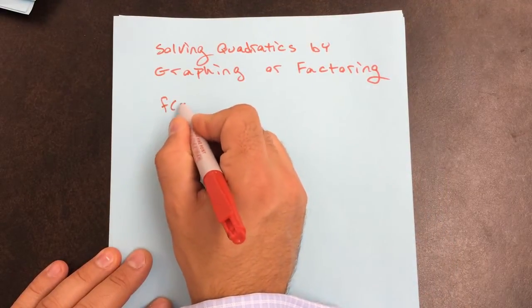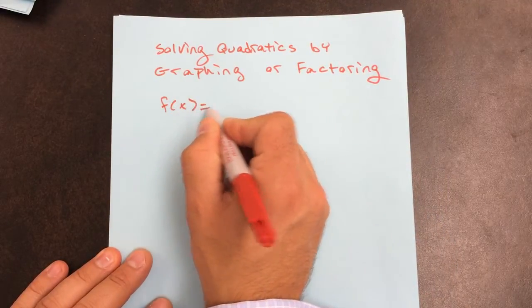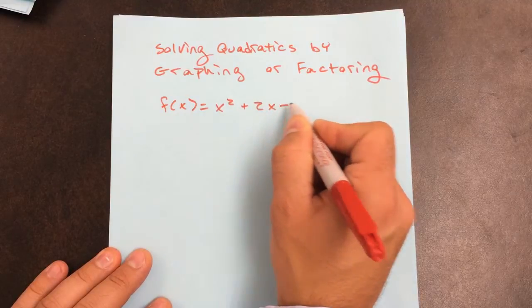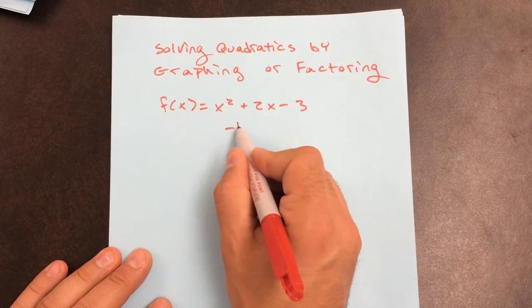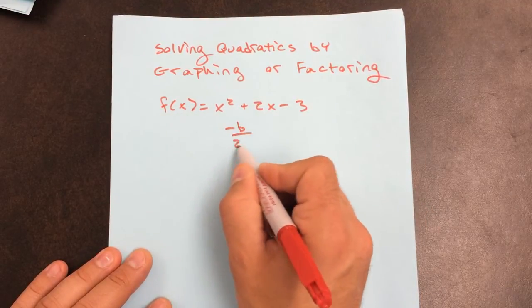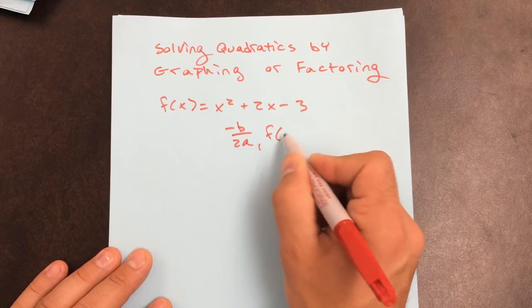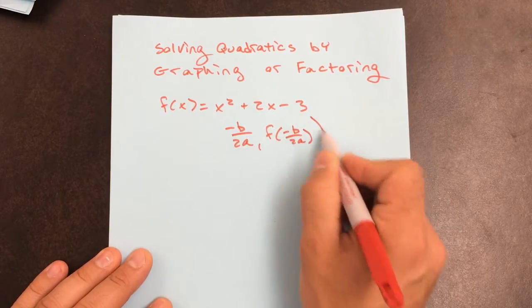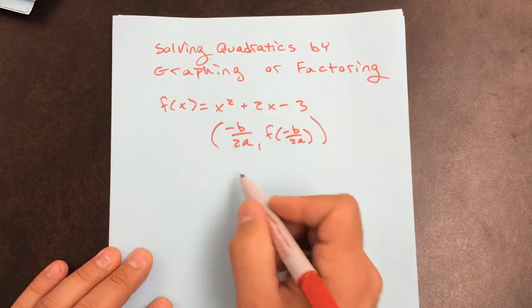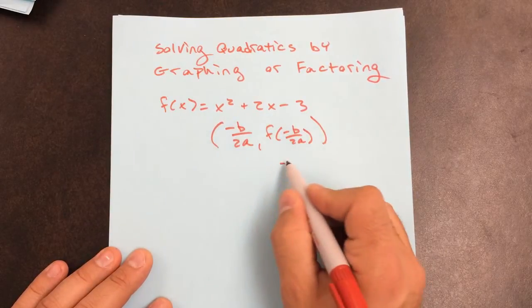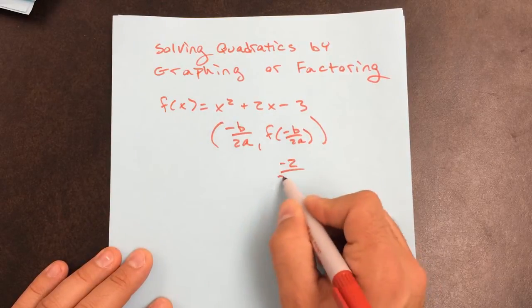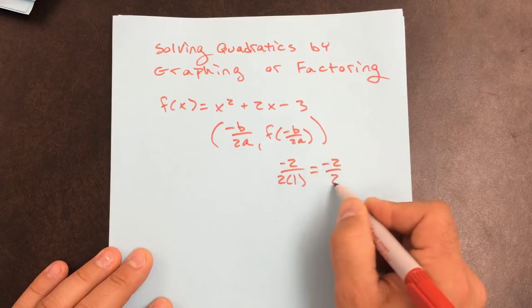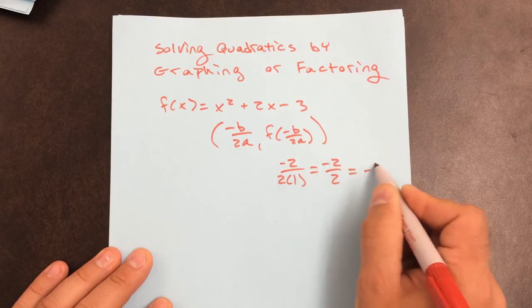So if I give you a function rule that looks like this, the first thing I want you to do is figure out what the vertex is. Remember your vertex is negative B over 2A, comma the function rule when you plug in negative B over 2A. Negative B is negative 2, A is 1, so that gives me negative 2 over 2, or negative 1.